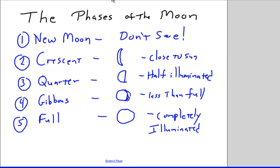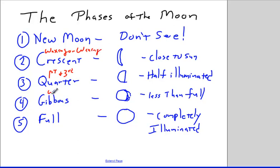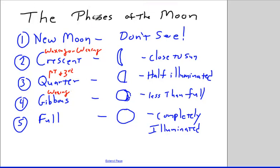There are also a couple of other parts we can add in. In the quarter phase there is first quarter and third quarter. In the crescent and gibbous phases, you can have a waxing crescent or a waning crescent, and similarly you can have a waxing gibbous or a waning gibbous.